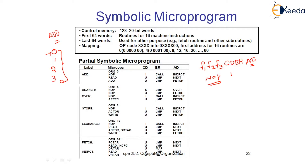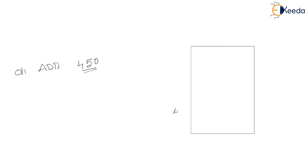If you want to perform an arithmetic operation, first we need to fetch the operand from the main memory. For the instruction 'add 450', we observe the most significant digit, which states the addressing mode. If it is 0, then 450 is a direct address. If it is 1, then 450 is an indirect address, meaning at address 450 there is one more address — for example, 1050.